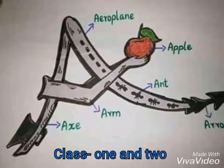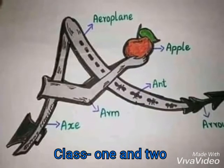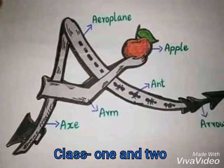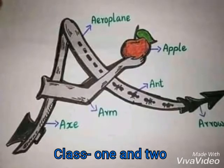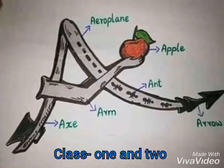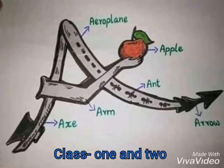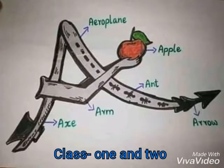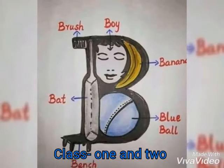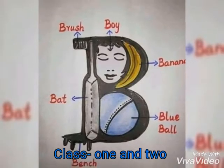A for apple, apple means apple. A for ant, ant means pipra.